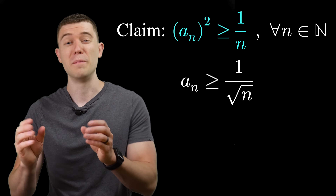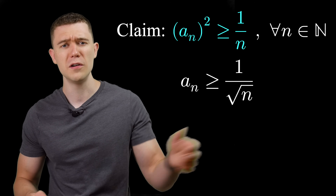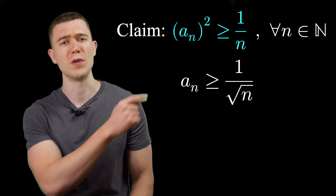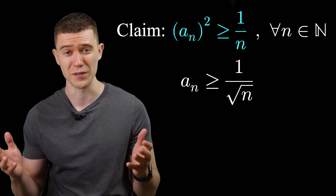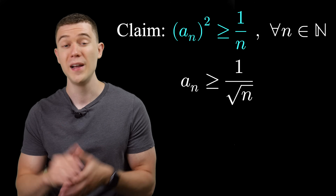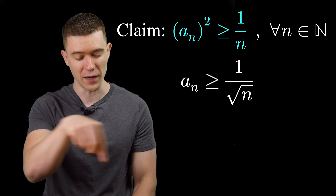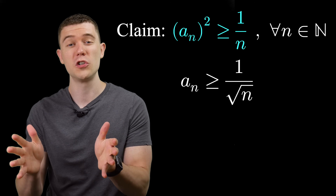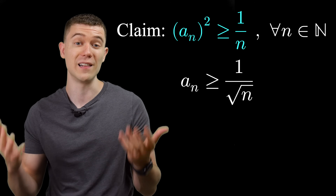Let's prove our claim with mathematical induction. Think of it like lining up dominoes, tipping the first one over, and watching the rest fall — though there are infinitely many here. We need a base case (the first domino), and then an induction step where we assume if any domino tips, the next one falls. Those two facts ensure all dominoes tip and the claim is proven.